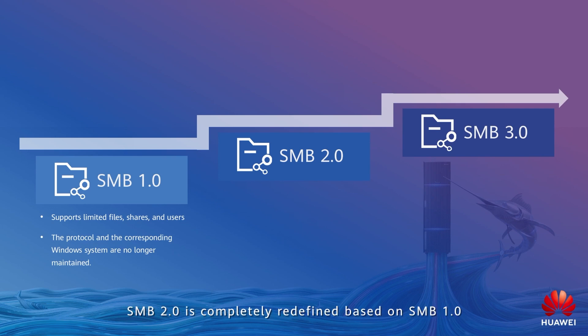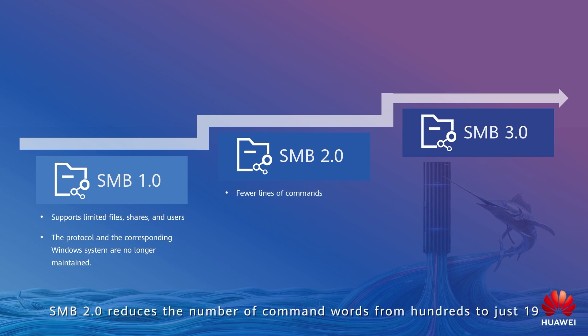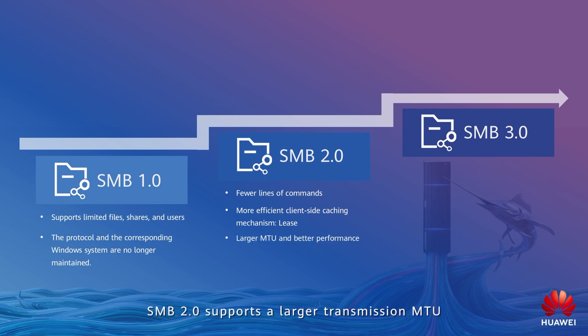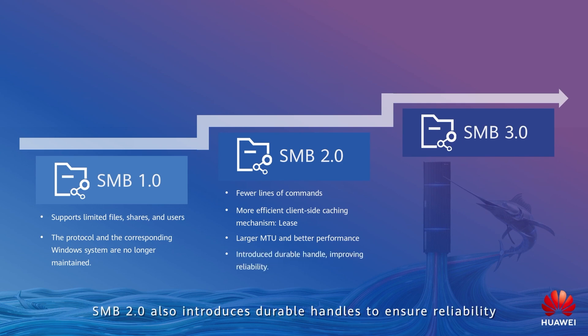SMB 2.0 is completely redefined based on 1.0. First, SMB 2.0 reduces the number of command words from hundreds to just 19. Second, SMB 2.0 introduces a client-side caching mechanism, LEASE, which is more efficient than Oplock. Third, it supports a larger transmission MTU. Therefore, SMB 2.0 provides better performance. SMB 2.0 also introduces durable handles to ensure reliability.